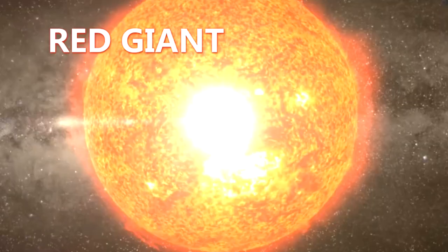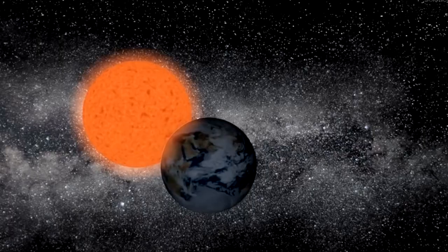And it's going to be so large that its outer radius is actually going to reach the Earth's orbit. It's going to be a huge star. And then, eventually, it'll blow off its outer layers and become a white dwarf star. And that will be its final phase.